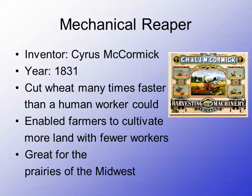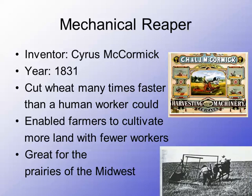Next up we've got the mechanical reaper, invented by Cyrus McCormick in 1831. The beauty of this invention is that it would cut wheat so much faster than a human worker could with just a sickle. You can see in the image here where they would hook it up to some animal power — in this case horses — and it would help farmers harvest wheat much more quickly. It enabled farmers to cultivate more land with fewer workers, and it was great for the prairies of the Midwest.